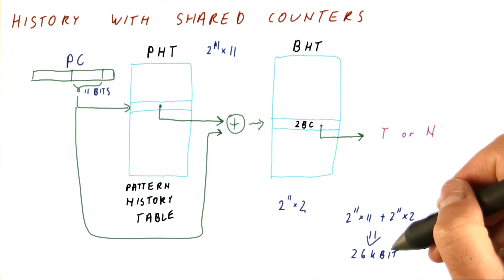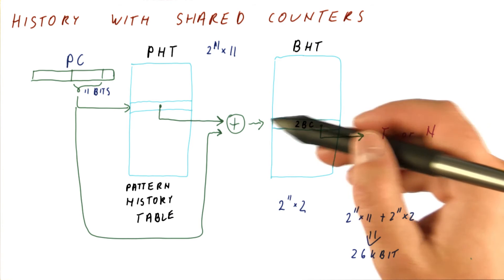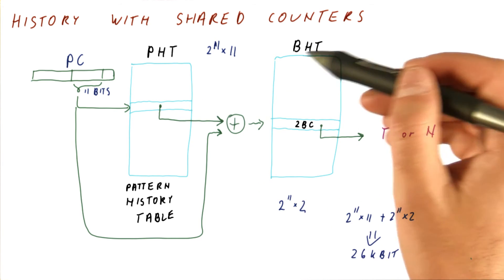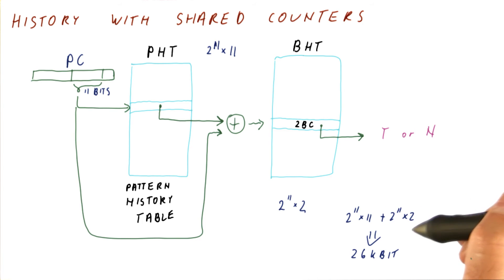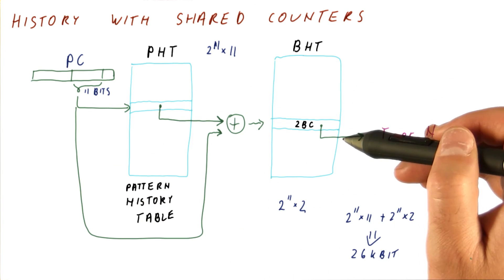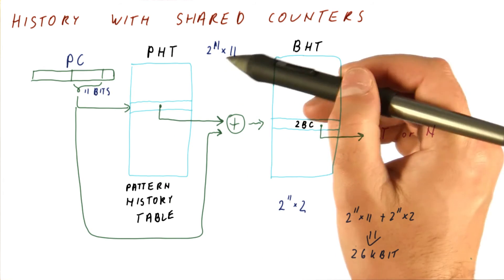This is much less than what the cost would be if we had an array of two-bit counters for each possible history in each entry over here. Pretty much these two to the 11th times two would need to be in each entry here, if we didn't do the XORing like this.